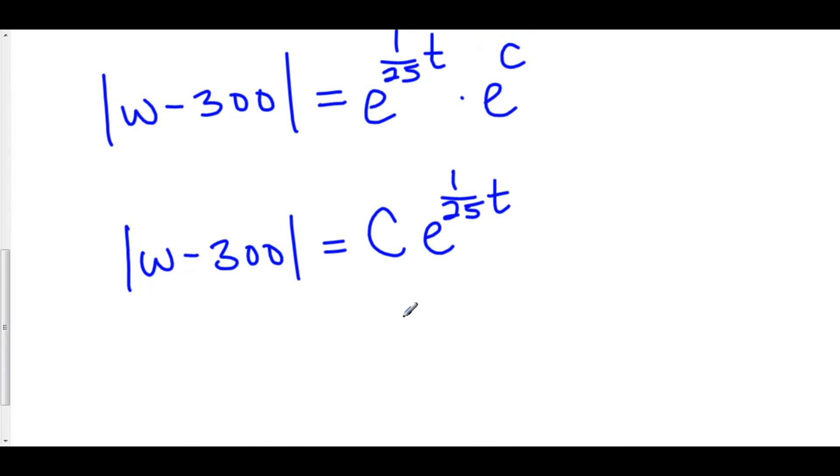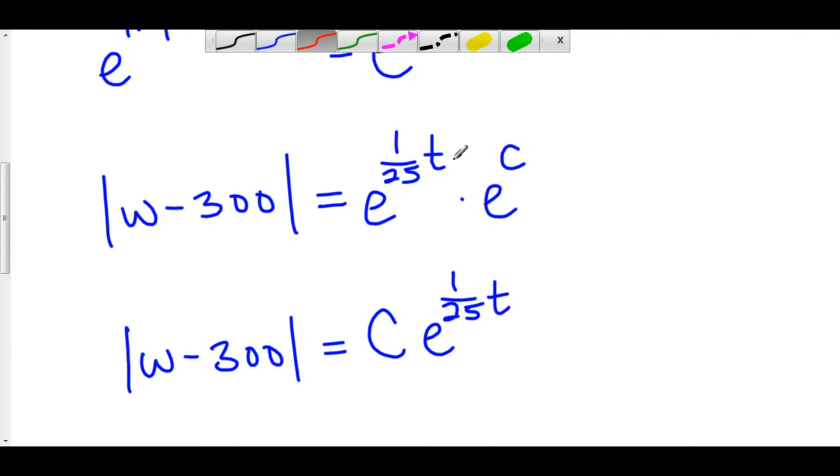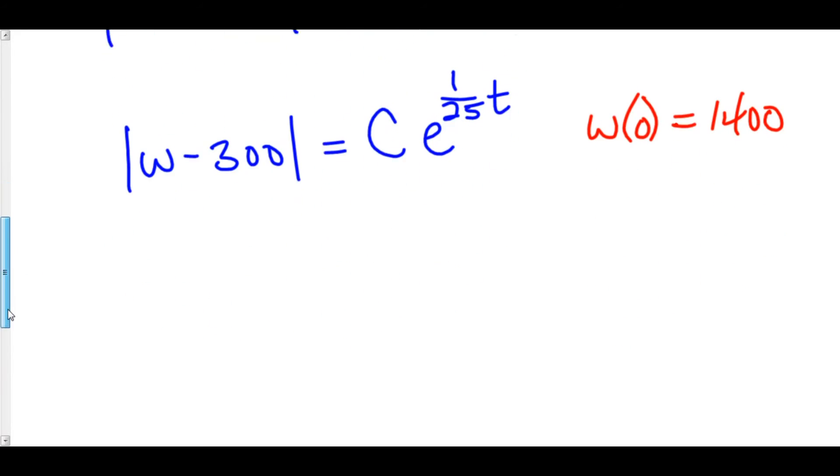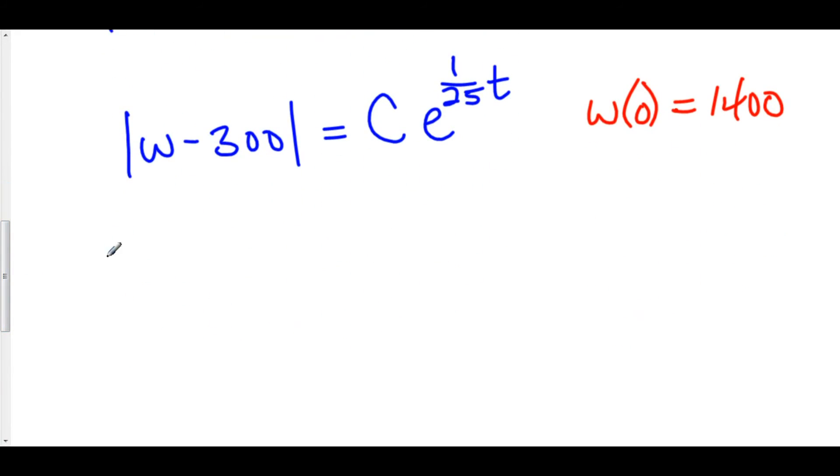It's at this point that we're going to solve for c. Our initial condition says that w(0) equals 1400. Let's plug 1400 into w and 0 into t. We have the absolute value of 1400 minus 300 equals c·e^0. e^0 is 1 times c is c. 1400 minus 300 is 1100, so c equals 1100.